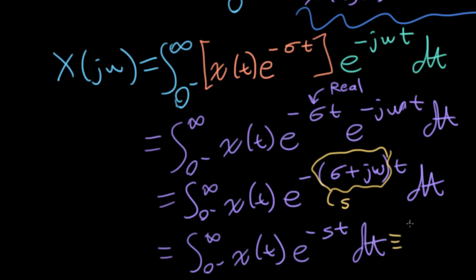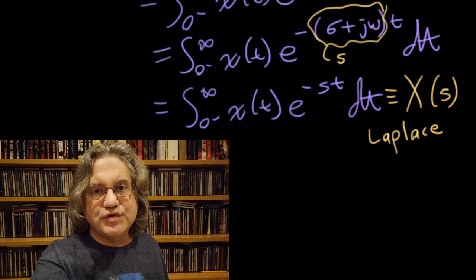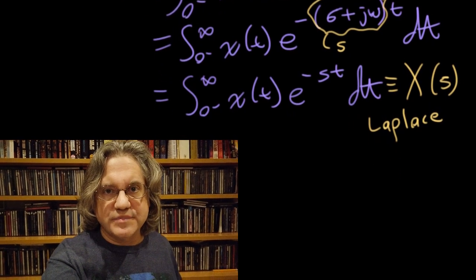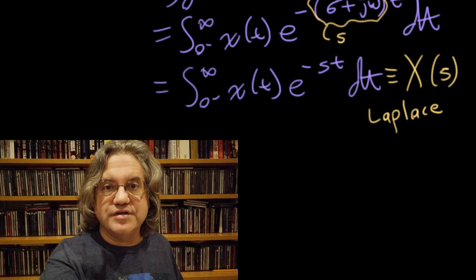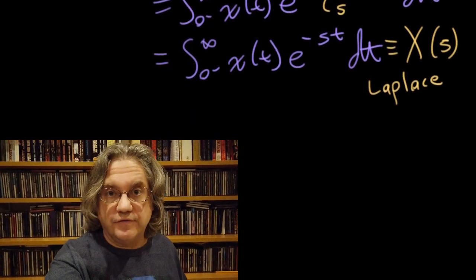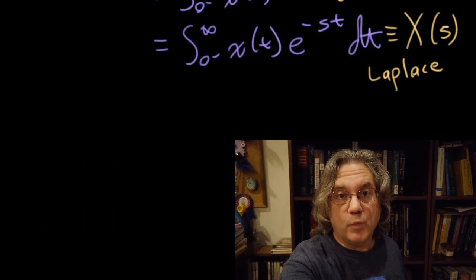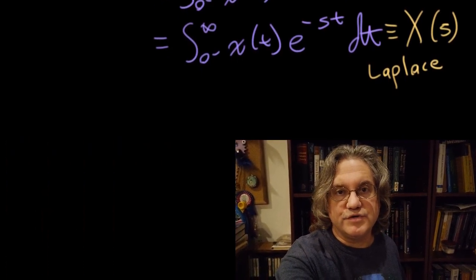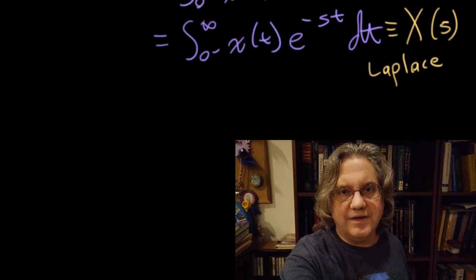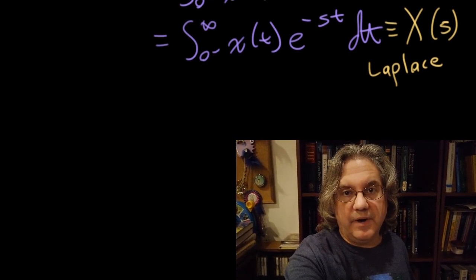Let's define this as something. Let's call it big X of s, and indeed call it the Laplace transform. This description of Laplace transforms as an extension of Fourier transforms isn't at all how Laplace himself would have thought about these integrals. Although Laplace was thinking about probability and differential equations, he wasn't thinking about anything like signal and system theory as we would think about it today.